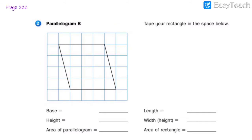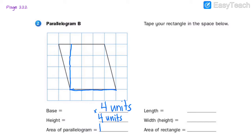Alright, parallelogram B. Let's count our base: 1, 2, 3, 4 — a base of 4 units. And our height — remember we're going from the corner to the top, not corner to corner: 1, 2, 3, 4 units again. So 4 times 4 is 16 units squared for our area. This is a parallelogram and a rhombus.